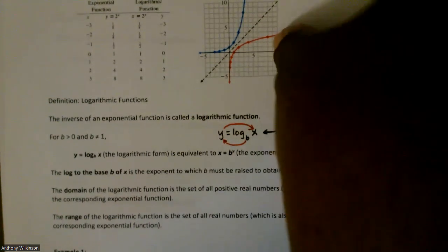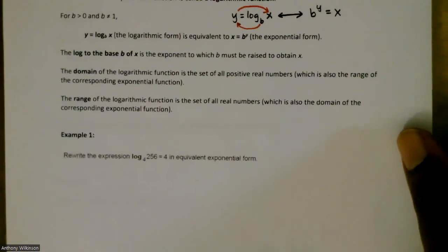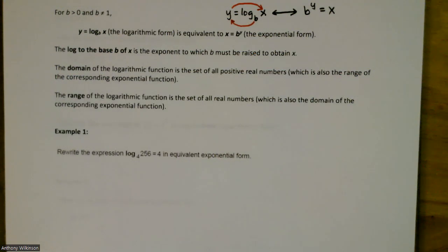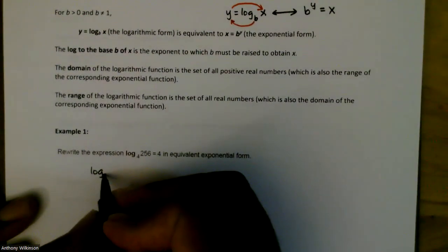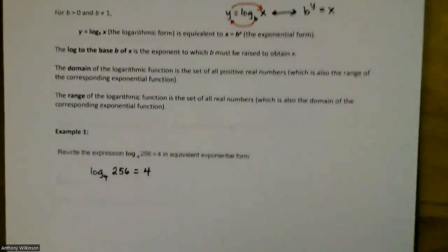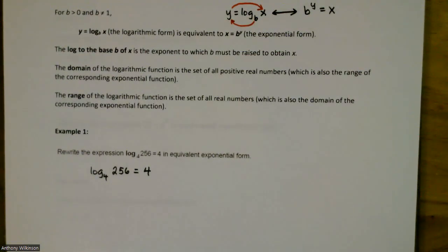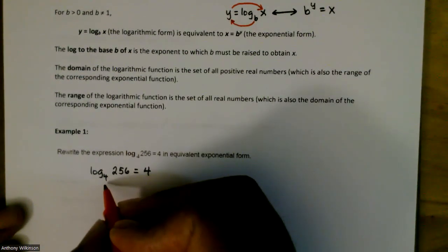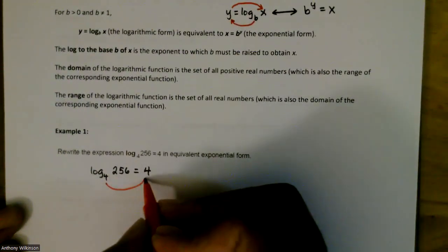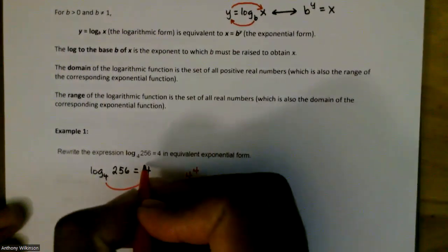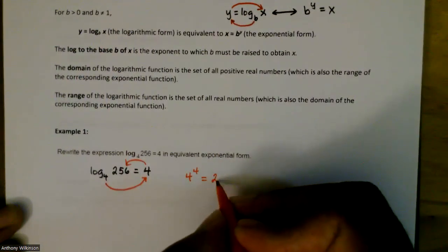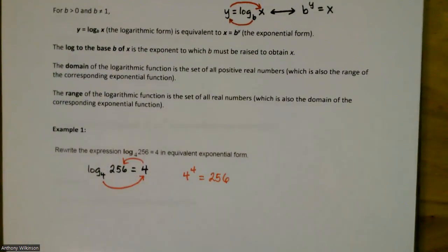Let's look at examples of converting from logarithmic form to exponential form. To rewrite log₄(256) = 4 in exponential form: the subscript 4 is your base, the 4 after the equal sign is the exponent, so it becomes 4^4 = 256. The base from the log becomes the base of the exponential expression, the right-hand side becomes the exponent, and what you're taking the log of becomes the result.